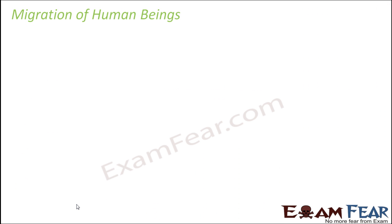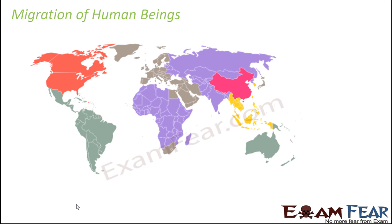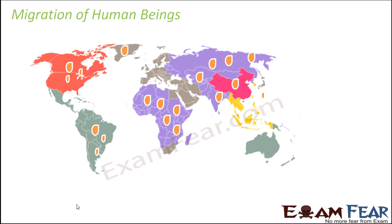Regarding the migration of human beings: initially they were seen in the regions of Africa. From Africa they started migrating to Asia around 2 million years ago, then around 1.5 million years ago migration happened to Europe, and then gradually to the rest of the world. That is how human beings gradually spread throughout the world.